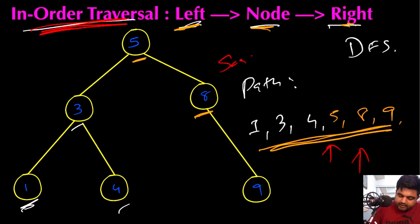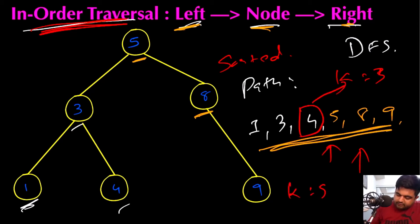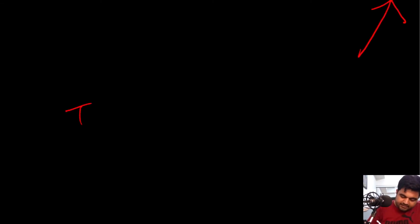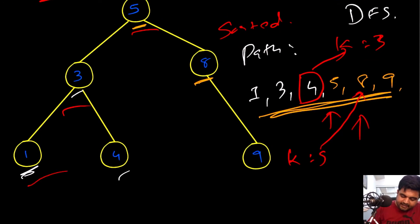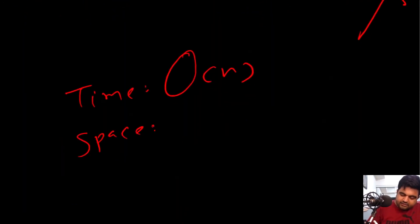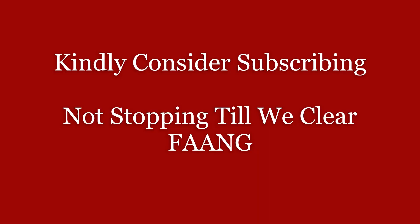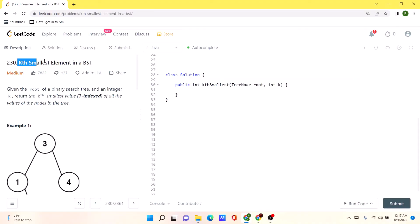This sorted path is exactly what we need. If k equals 3 we return 4 immediately; if k equals 5 we return 8. This is the optimal approach. The time complexity is O(n), where n is the number of nodes in the tree. The space complexity is also O(n) to accommodate our in-order traversal.